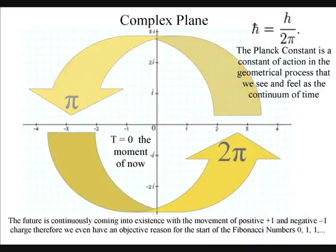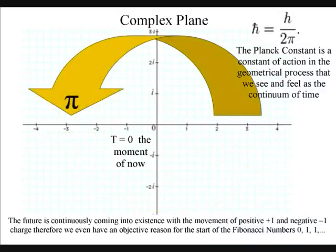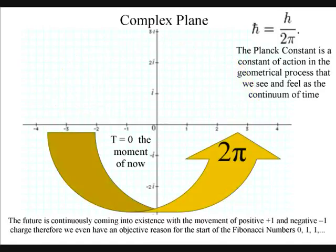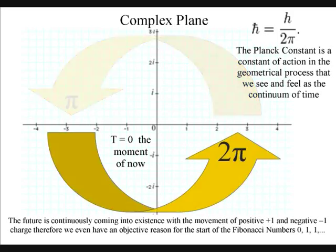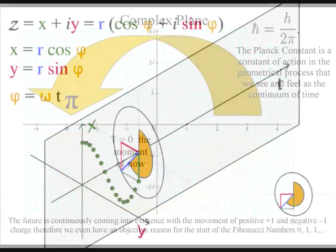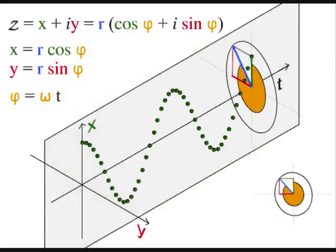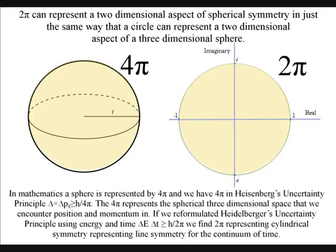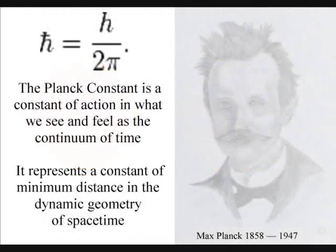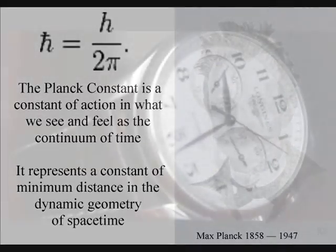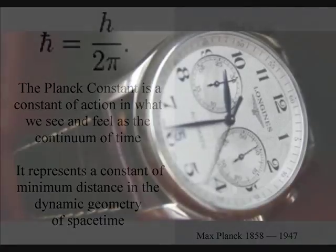In maths, 2pi can represent three things. Number one, it can represent a complete rotation on the complex plane. Number two, it can represent cylindrical symmetry that has line symmetry. And number three, it can represent a two-dimensional aspect of spherical symmetry. I will explain these three different aspects of 2pi within one universal process, with the Planck constant being a constant of action in the dynamic geometrical process that we see and feel as the passage of time.